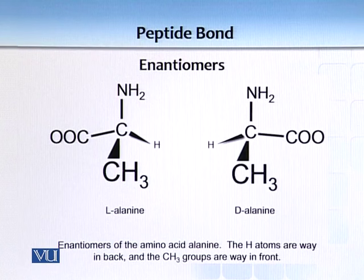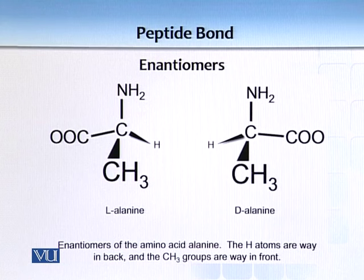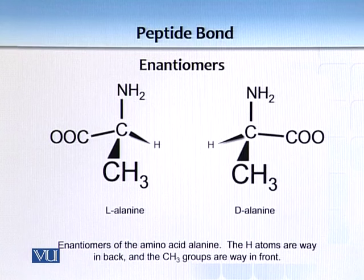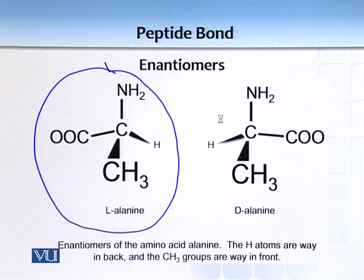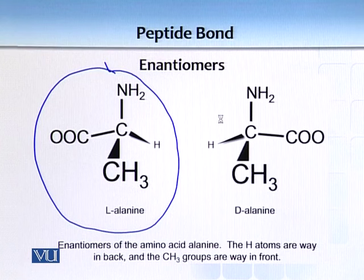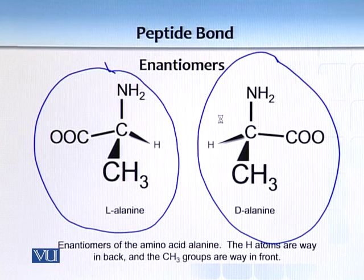A food for thought: amino acids are much like sugars in that they are dextro-rotatory and levo-rotatory. Our body mostly uses L amino acids. Glucose and similar molecules are dextro-rotatory. All the proteins and enzymes in our bodies are composed of L amino acids.